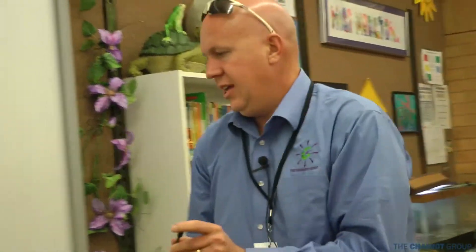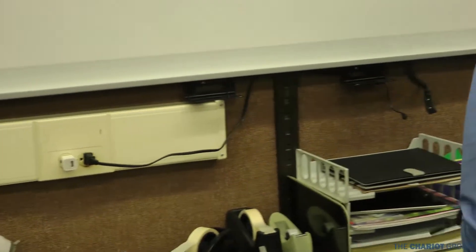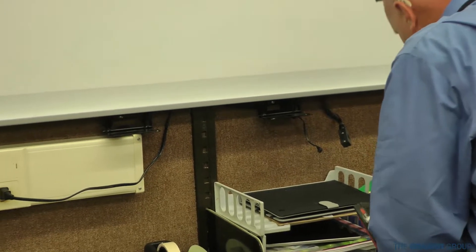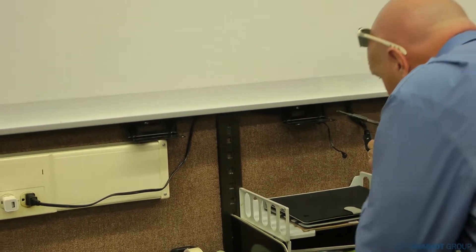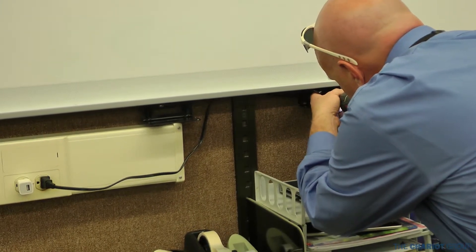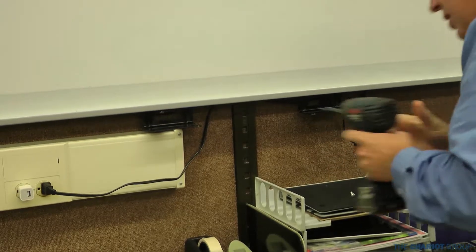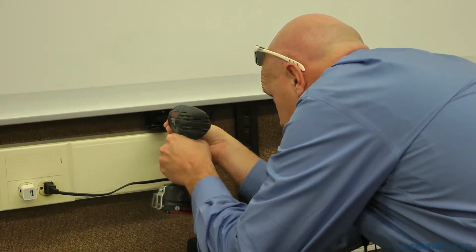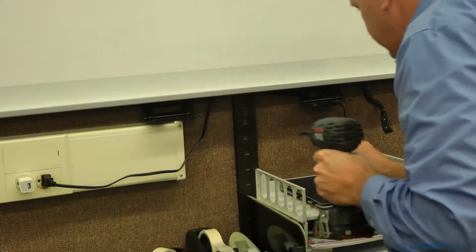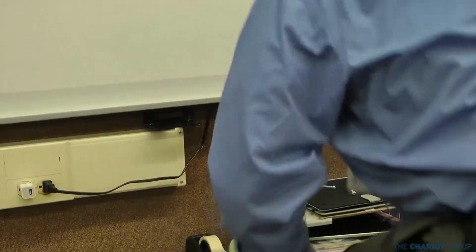And then we're going to take, underneath the board, you're going to have two screws, and they could be any type of screw, but in this board they're a Phillips screwdriver, Phillips bit. So we're going to take those out, set them down, and then we'll take down the board.